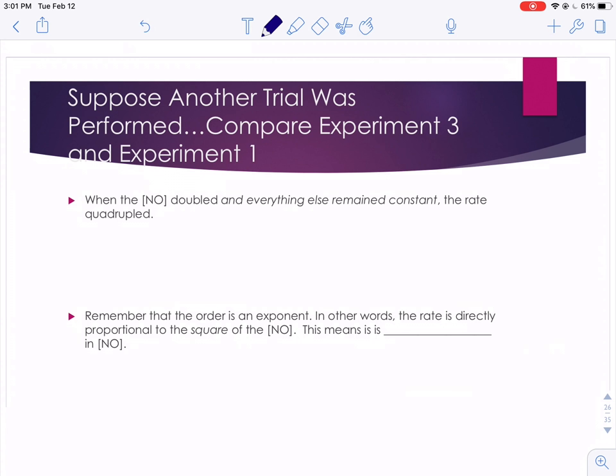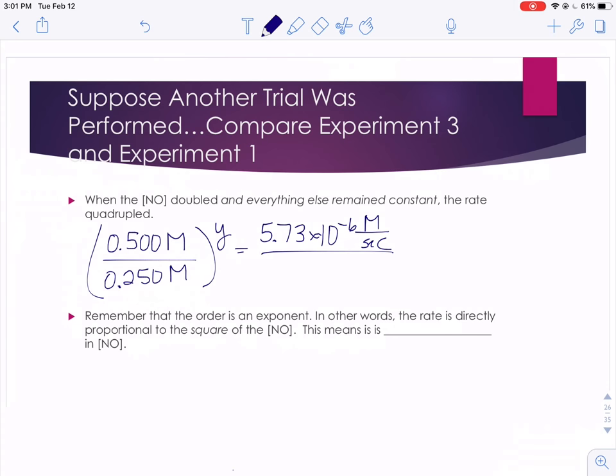So when we doubled that nitrogen monoxide concentration and everything else remained constant, the rate quadrupled. So when we did the concentration for the nitrogen monoxide in experiment 3 compared to the concentration of nitrogen monoxide in experiment 1, raised to some mystery exponent y, that's going to equal the rate for trial 3 over the rate for trial 1. And we do a little bit of algebra and simplify. Well, 0.5 divided by 0.25 is 2 to the y power, which is going to equal 5.73 over 1.43.